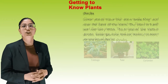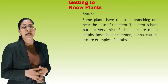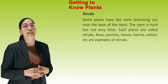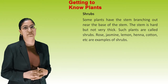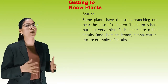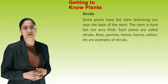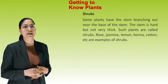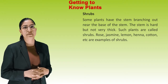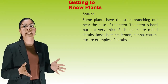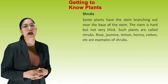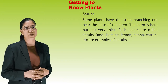Second, Shrubs — some plants have the stem branching out near the base of the stem. The stem is hard but not very thick. Such plants are called Shrubs. Rose, Jasmine, Lemon, Henna, Cotton etc. are examples of Shrubs.